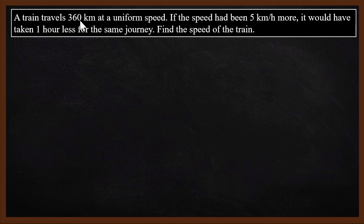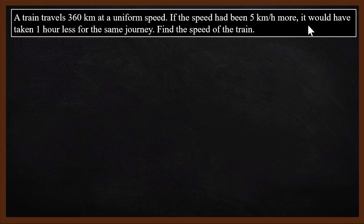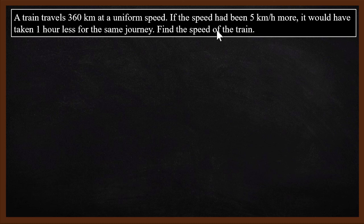A train travels 360 kilometers at a uniform speed. If the speed had been 5 kilometers per hour more, it would have taken one hour less for the same journey. Find the speed of the train.